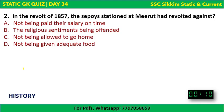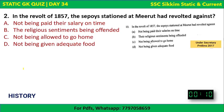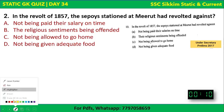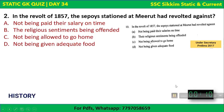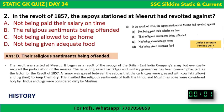Question 2: In the Revolt of 1857, the sepoys stationed at Meerut had revolted against what? This is also a previous year question from Under Secretary Prelims 2017. The correct answer is that their religious sentiments were being offended. Other reasons included not being paid salary on time, not being allowed to go home, and not being given adequate food, but the primary reason was that their religious sentiments were being offended.